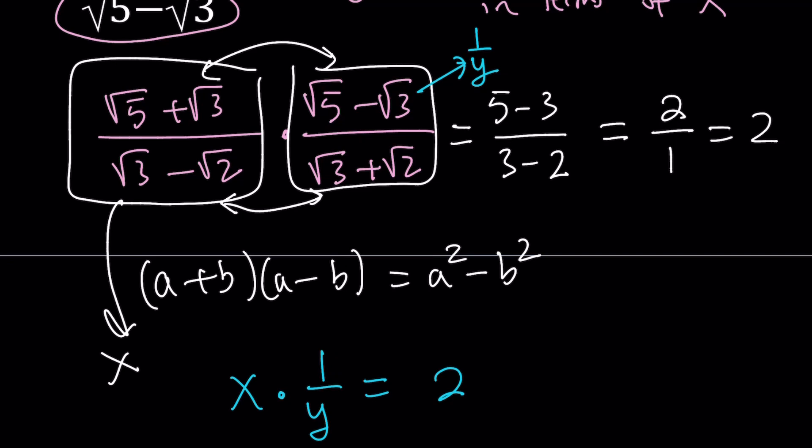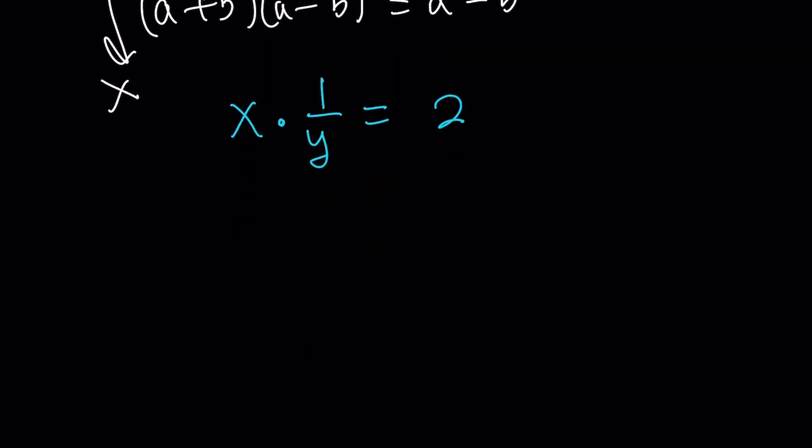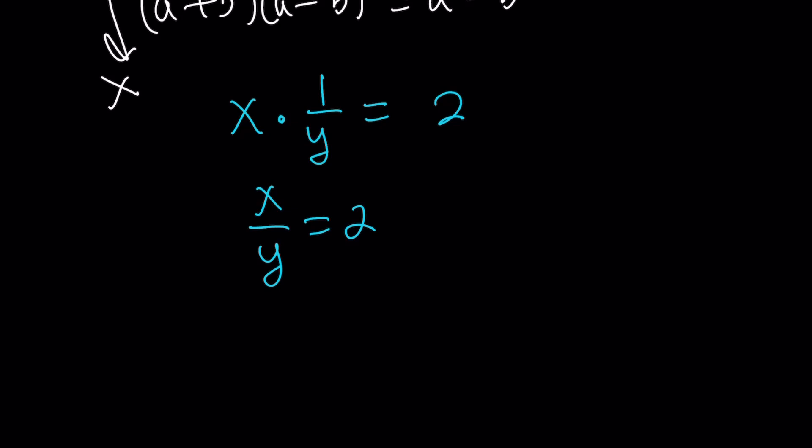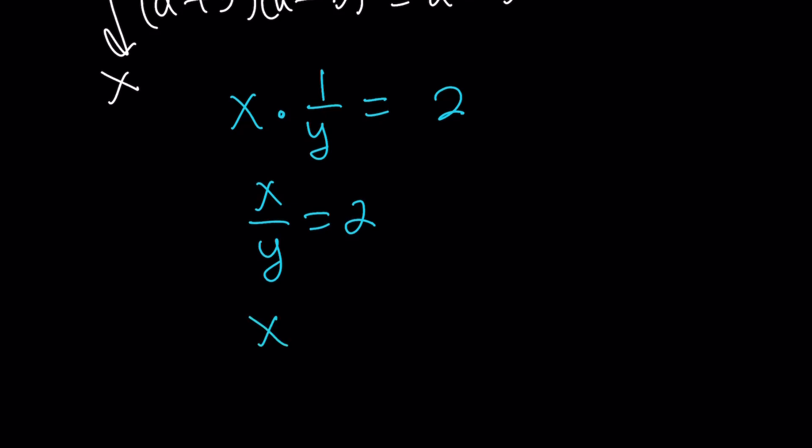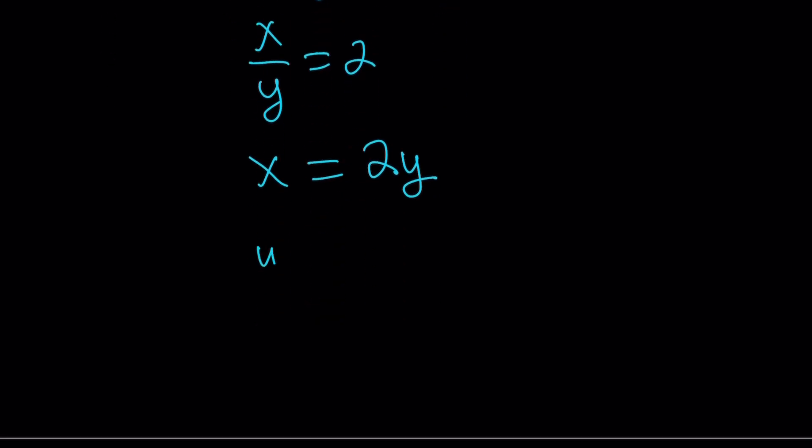I was trying to get y in terms of x, and I'm almost there. Let's write this as a ratio: x over y equals 2, and then cross multiply. Write it as x equals 2y. Remember, we're trying to solve for y, and the answer is supposed to be in terms of x. So divide both sides by 2 and write y as x over 2.